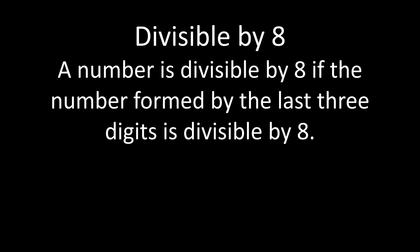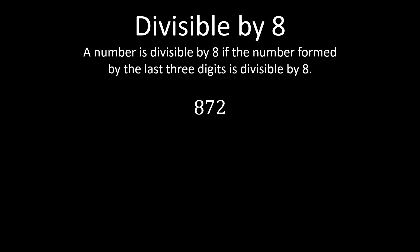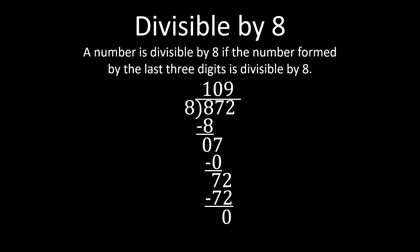The rule for whether a number is divisible by 8 is that if the number formed by the last 3 digits is divisible by 8, then the number is divisible by 8. So if we're looking at 872, it's only a 3-digit number, so we have to consider all 3 digits and determine whether those 3 digits are divisible by 8. You're going to have to divide it by 8. Determining this takes a little bit of work. When we work through the division, 872 divided by 8 is 109, so 872 is divisible by 8.